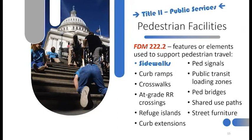ADA Title II covers public services, and sidewalks are considered a public service. Features found along the pedestrian facility include sidewalks, curb ramps — the sloped surface transitioning from sidewalk elevation to roadway elevation — crosswalks across roadways and at-grade railroad tracks, refuge islands such as pork chop islands and median refuges, curb extensions, pedestrian signals, public transit loading zones, pedestrian bridges, shared use paths, and street furniture.